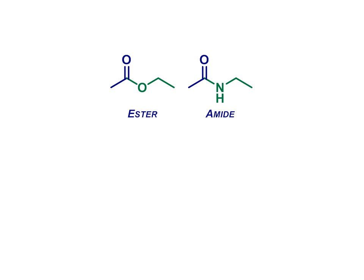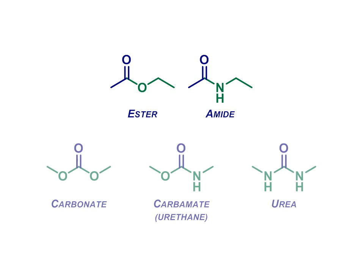There's one more thing for us to do before we leave this topic for now, which is to consider three other carbonyl containing functional groups that we need to be aware of as we move forward on our chemical adventures. These have some similarities to the ester and the amide, in that there are oxygen and nitrogen atoms attached to the carbonyl carbon. The carbonate, the carbamate, which is also sometimes called a urethane, and the urea.